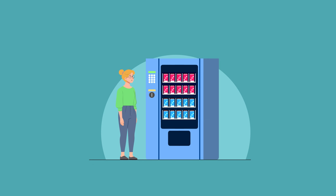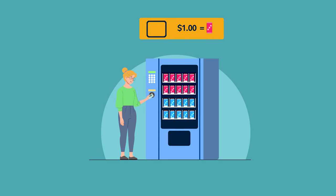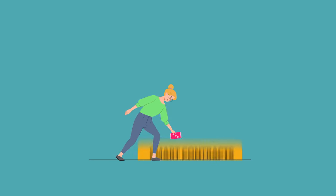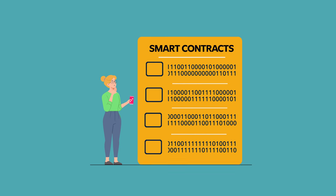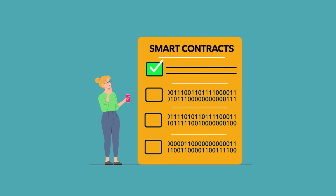A smart contract follows the same principles as a vending machine: insert the incorrect amount and there's no snack. Insert the correct amount and a snack will be released. Smart contracts are computer code programmed to automatically execute a predetermined action once certain requirements are met, just like a vending machine.